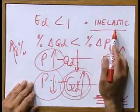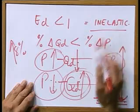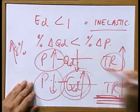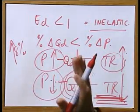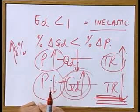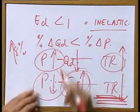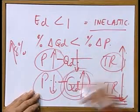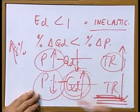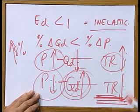To summarize: when the demand is inelastic, price and total revenue move in the same direction. If the price increases, total revenue increases. If the price decreases, total revenue decreases.